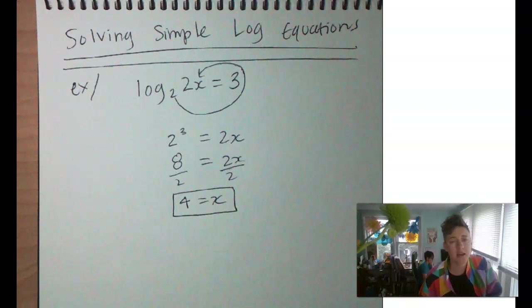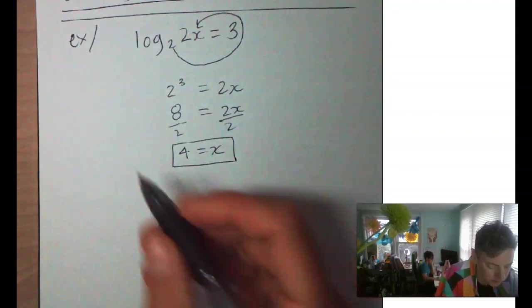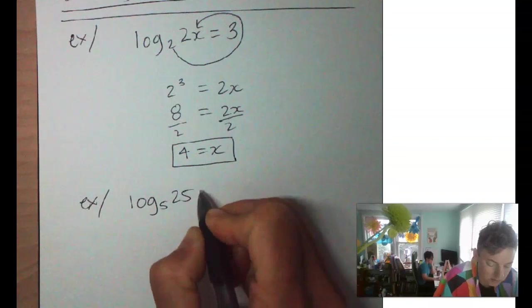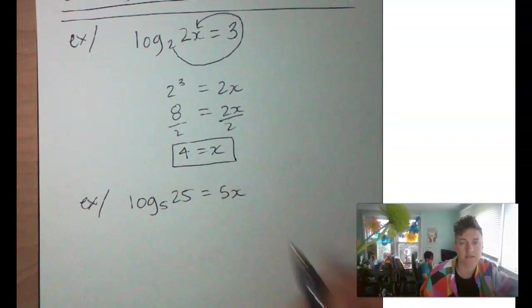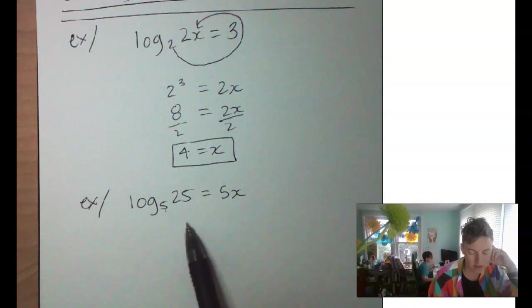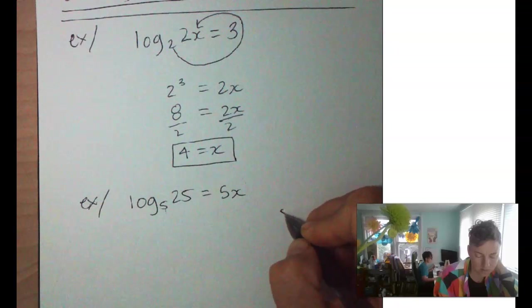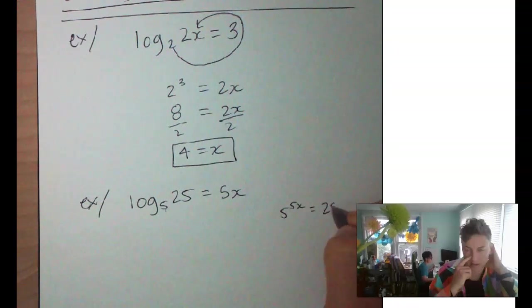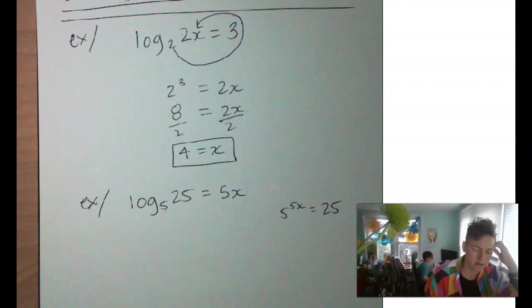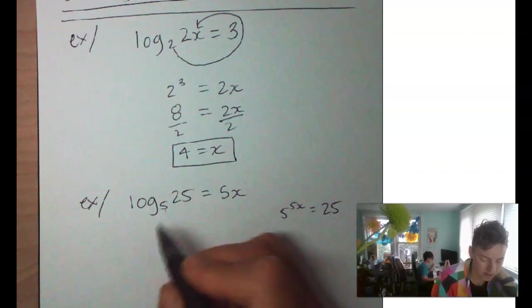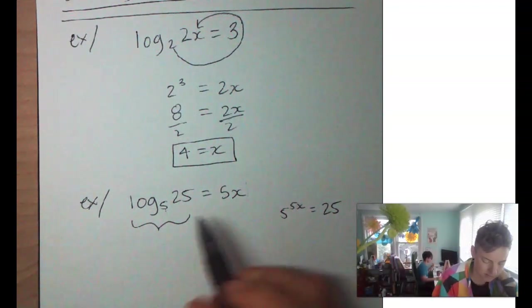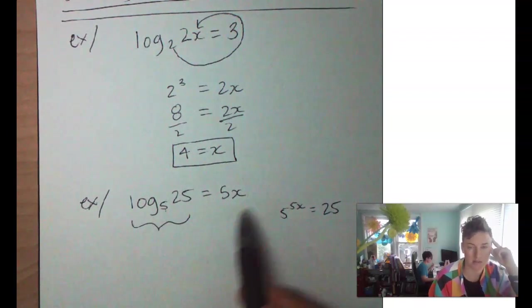Okay, let's try another one. Slide that up. Give us some room. Our next example. Log base 5 of 25 equals 5x. Okay, if we converted this right away to exponential form, we'd have 5 to the 5x equals 25. 5 to the 5x equals 25. I don't think that's real helpful right now. Because I don't know what that is. But let's just look at the log base 5 of 25.